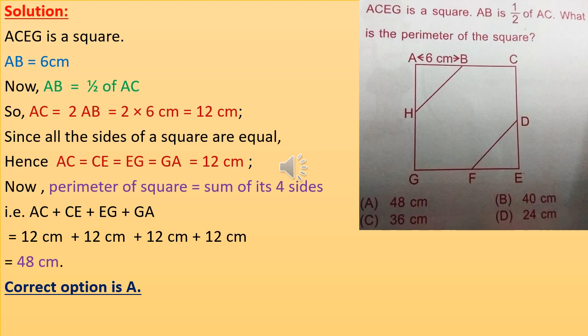Next question: ACEG is a square, and AB is half of AC. What is the perimeter of the square? AB equals 6 cm. Since AB is half of AC, then AC equals 2 times AB equals 2 times 6 cm equals 12 cm. Since all sides of a square are equal, AC equals CE equals EG equals GA equals 12 cm.